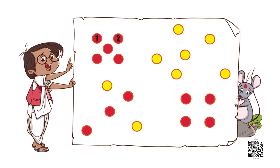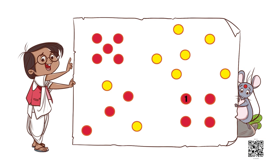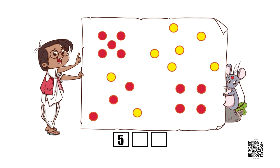Now let us count the number of bindis in each group. Can you count the number of bindis in this group? One, two, three, four, five — five red bindis. And this group? One, two, three — it has three red bindis. And what about the last one? One, two, three, four — it has four red bindis. You have counted very nicely. So we write the numbers five, three, and four in the boxes.